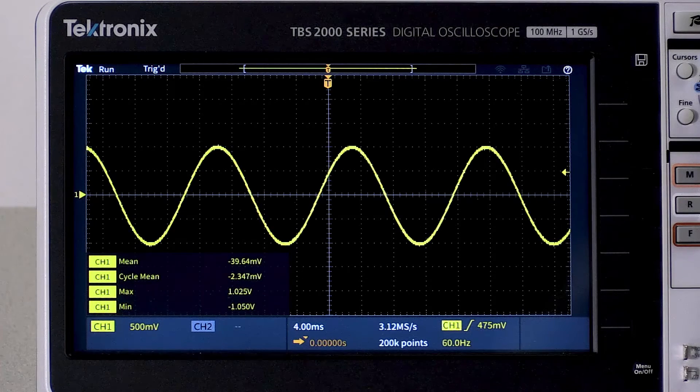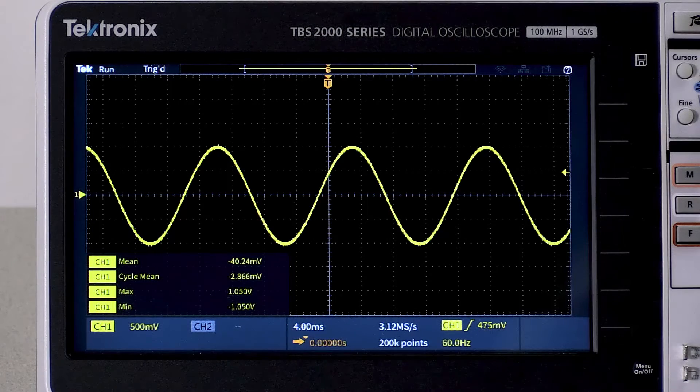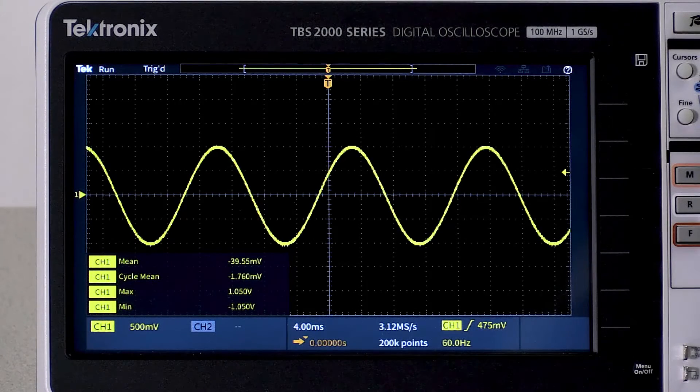For non-periodic signals, you can use cursor gating to determine exactly which points are used in the measurement.